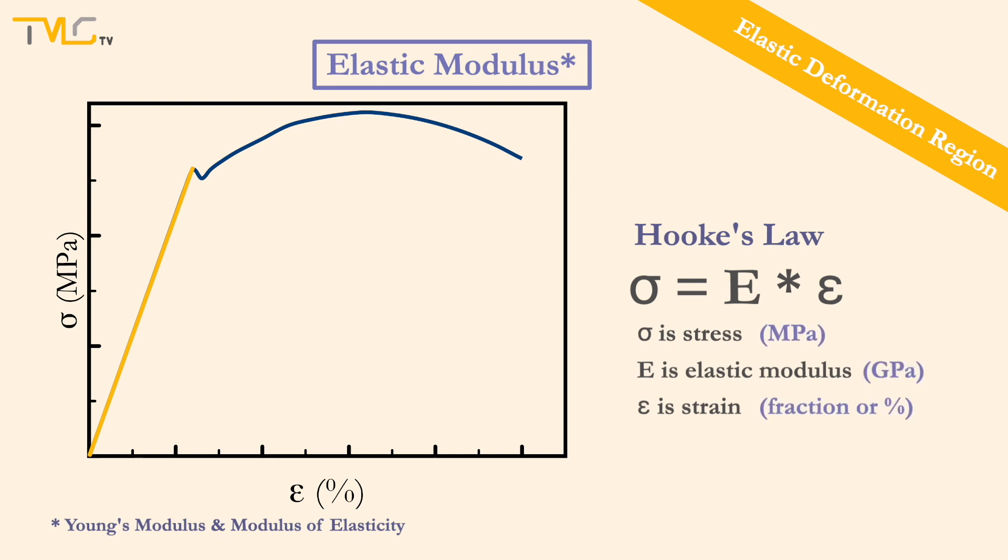Here, sigma, E, and epsilon stands for stress in MPa, elastic modulus in GPa, and strain in fraction, respectively. In other words, elastic modulus can be defined as the slope of the stress-strain curve in the elastic region.